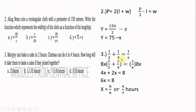Find the LCD, which is 8x (2 times 4 times x). Multiply both sides by 8x: 8x divided by 2 is 4x, 8x divided by 4 is 2x, and 8x divided by x cancels to 8. So 4x plus 2x equals 6x equals 8. Dividing both sides by 6 gives x equals 8 over 6, which simplifies to 4/3 hours, or 1 and one-third hours.